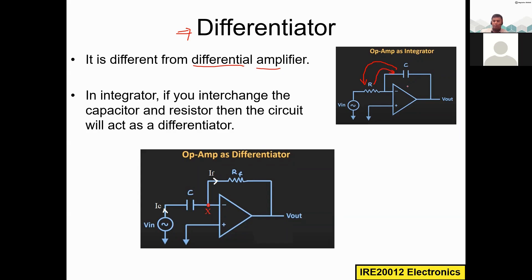It's very simple — if you just replace the components with each other, you will get the differentiator circuit. So if you interchange the capacitor and resistor from the integrator, the circuit becomes a differentiator.